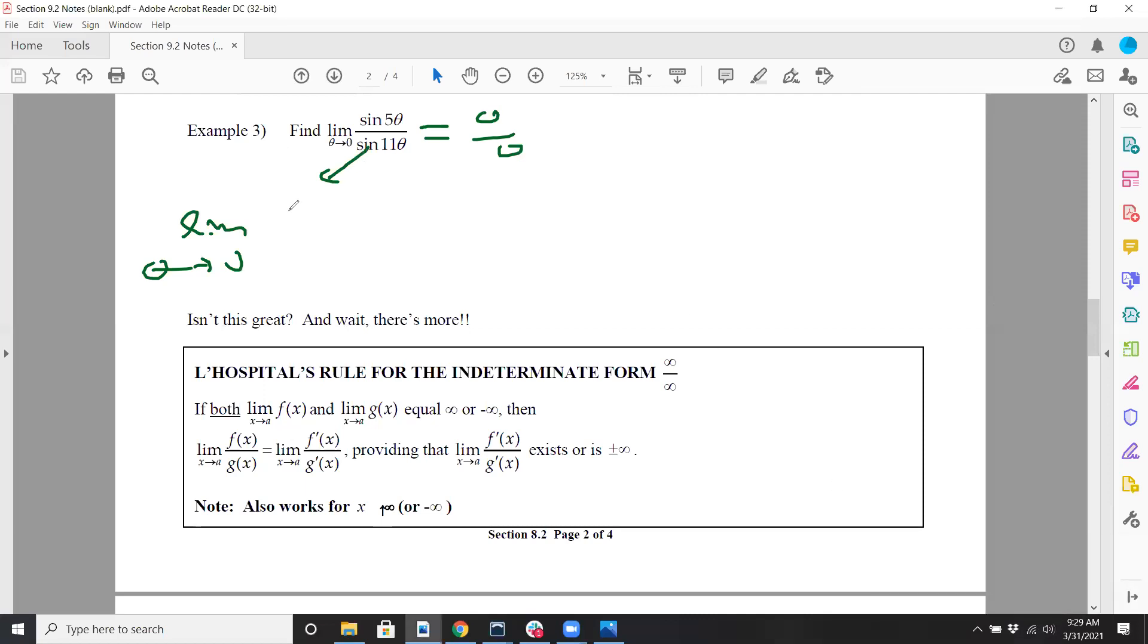So limit as theta approaches 0. That's going to be cosine 5 theta, but you've got to multiply 5 on the outside. And the derivative of sine 11 theta is 11 cos 11 theta. Then plug 0 straight up, 5 times cosine 0 over 11. 5/11, boom. Because cosine 0 is just 1. Easy peasy.